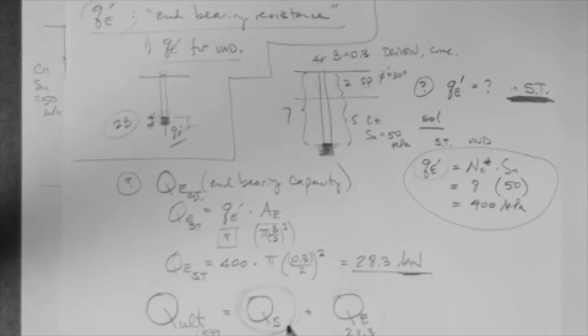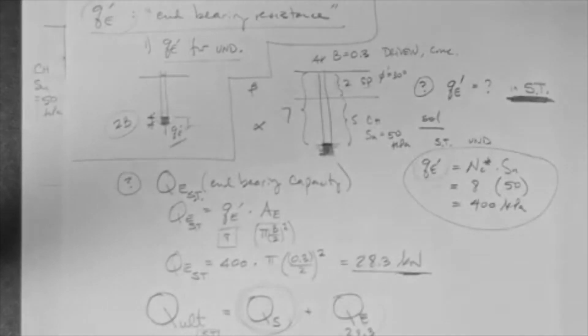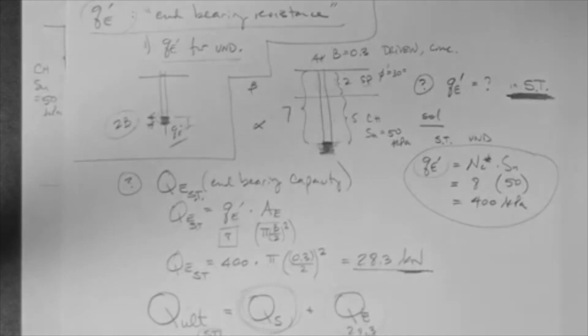We would then sum the side friction capacity. If we had it, or if we calculated it, you can do it. In this case, you would use alpha for this layer, and obviously beta for that one. Then you add and get the ultimate for the short term.